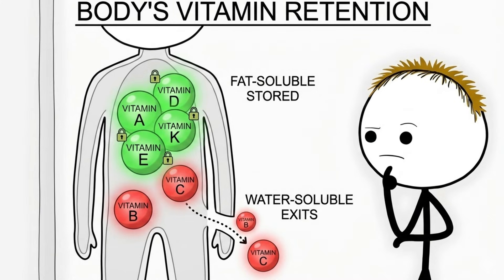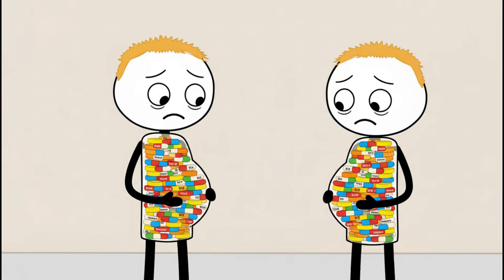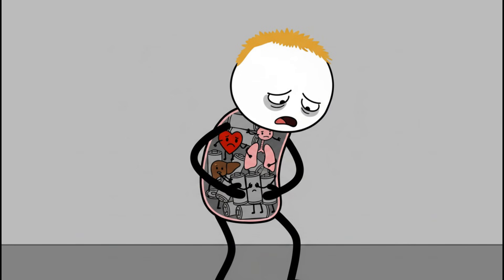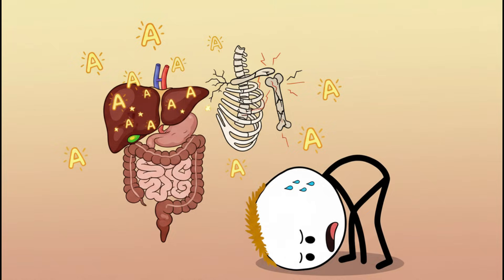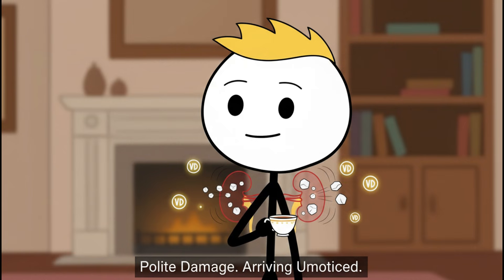Fat-soluble vitamins A, D, E, and K are especially sneaky. Your body stores them instead of flushing them out. That sounds efficient until you realize it's like hoarding batteries inside your organs. Too much vitamin A can damage your liver and bones. Too much vitamin D can raise calcium levels until your kidneys quietly file a complaint.